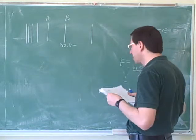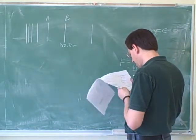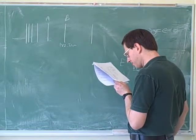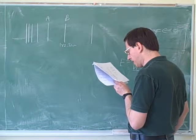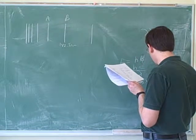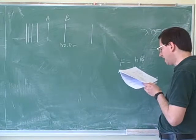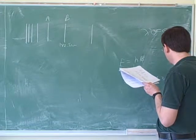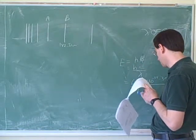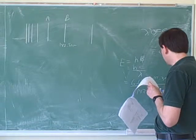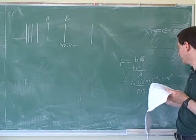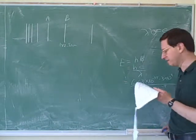So then we're supposed to plug in, so for h, we have to plug in 6.63 times 10 to the negative 34. And then for c, we plug in 3 times 10 to the 8. And what do I plug in for lambda? 142.5 times 10 to the negative 9, because nano means 10 to the negative 9. So we have to put things into SI units, so we have to put 10 to the negative 9 for nano. So now you have to do that unit conversion.